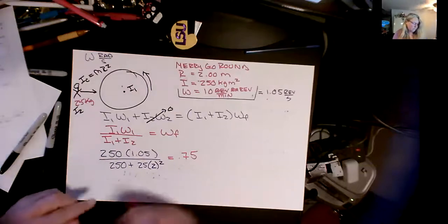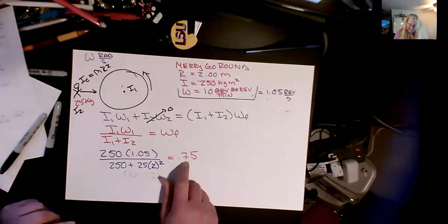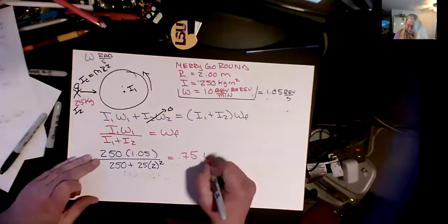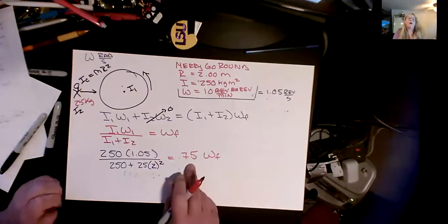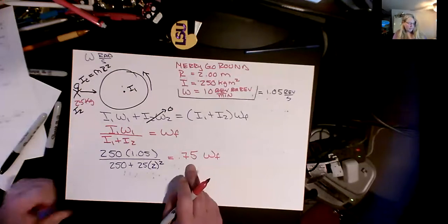Cool. So that is the omega, omega final, of the merry-go-round child system.